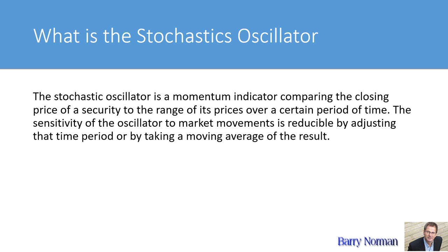If price is moving up, you would expect that the closing price would be nearest to the high. And if the price is moving down, it would be nearest to the low — because if price is moving up, it may push up a little higher and the bulls ease down a little bit, but it will still close near its highest point. This is what stochastic measures: the range of price over a certain period of time as compared to its close price.